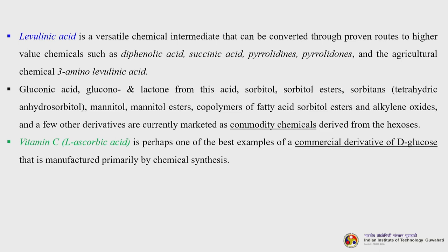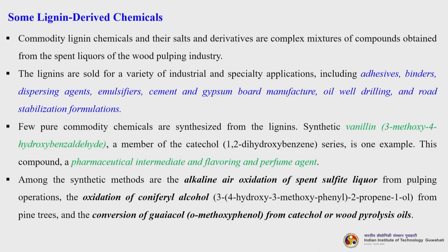Vitamin C (L-ascorbic acid) is perhaps one of the best examples of a commercially important derivative of D-glucose manufactured primarily by chemical synthesis. Commodity lignin chemicals and their salts and derivatives are complex mixtures of compounds obtained from the spent liquors of the wood pulping industry. The lignins are sold for industrial and specialty applications including adhesives, binders, dispersing agents, emulsifiers, cement and gypsum board manufacture, oil well drilling and road stabilization. Synthetic vanillin — a member of the catechol series — is one pure commodity chemical synthesized from lignins, produced by alkaline air oxidation of spent sulfite liquor, oxidation of coniferyl alcohol from pine trees, or conversion of guaiacol from catechol or wood pyrolysis oils.